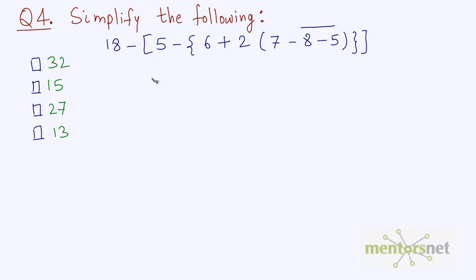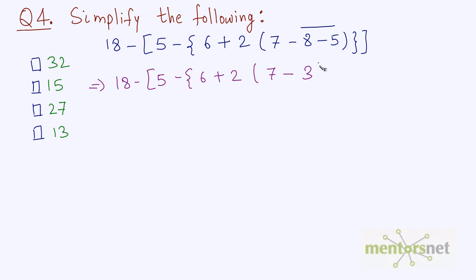Question number 4 — you have to simplify the following expression. Whenever you see a bar-like vinculum over an expression, you have to solve that part first. So let's solve that part first and keep other parts as they are. Then, since there are multiple brackets, you solve the round parentheses first.